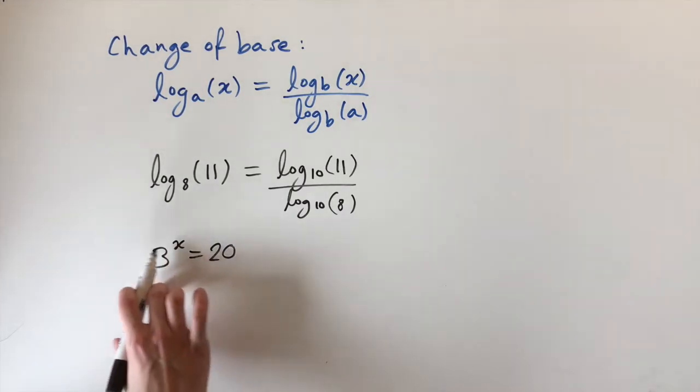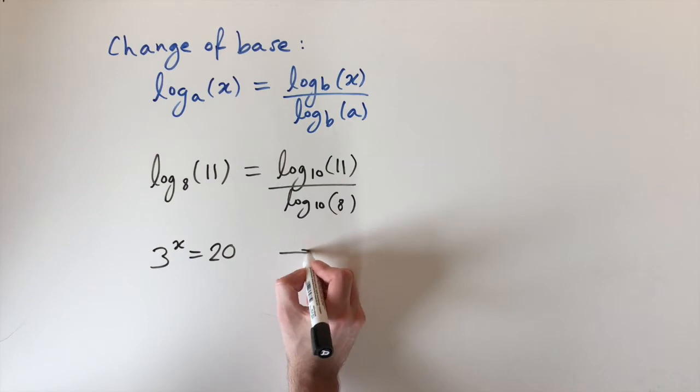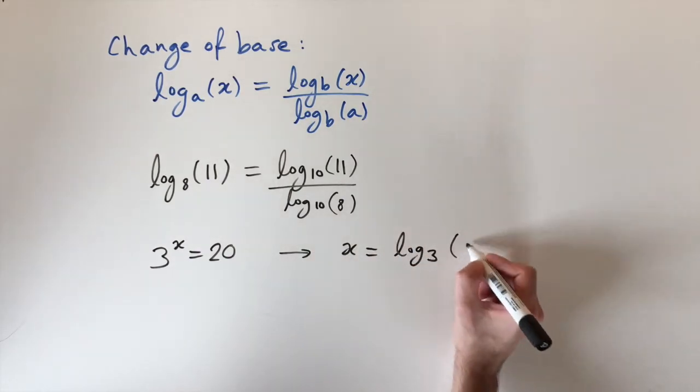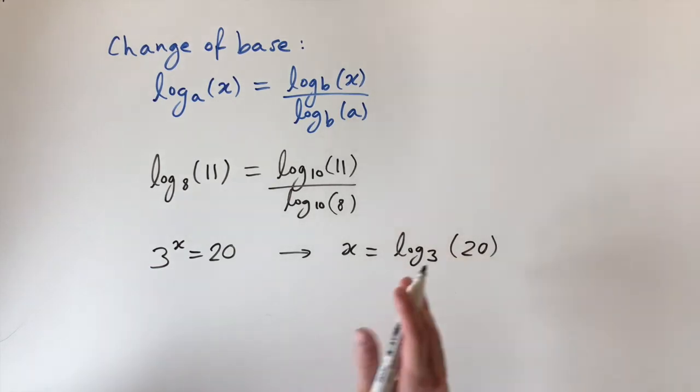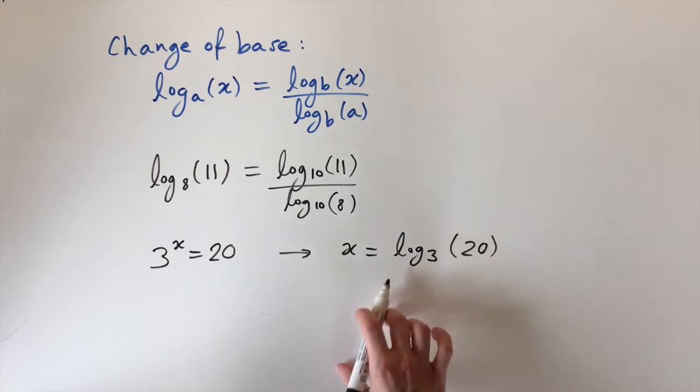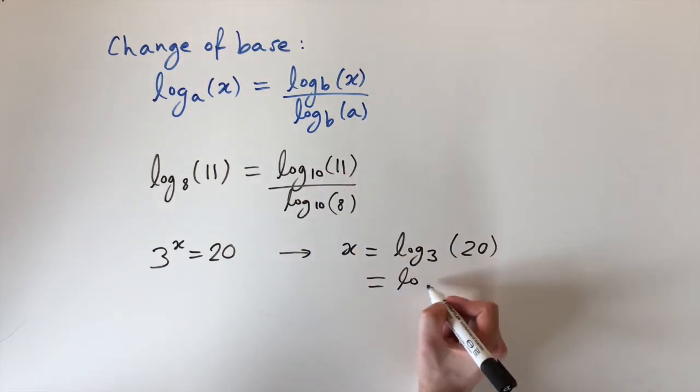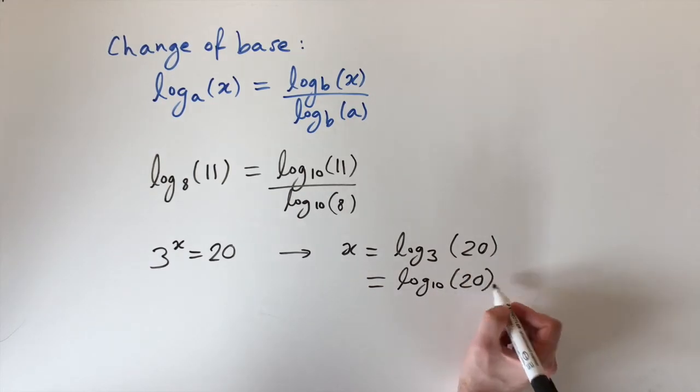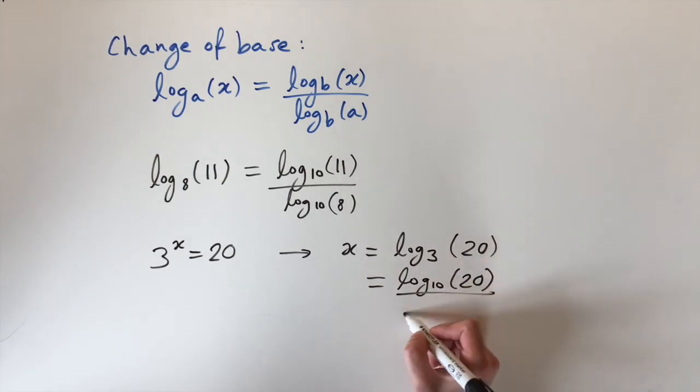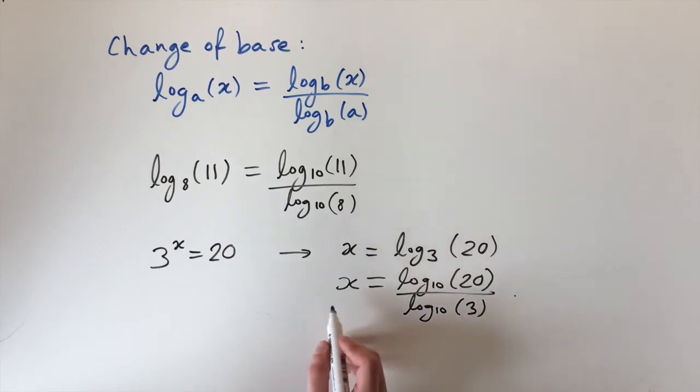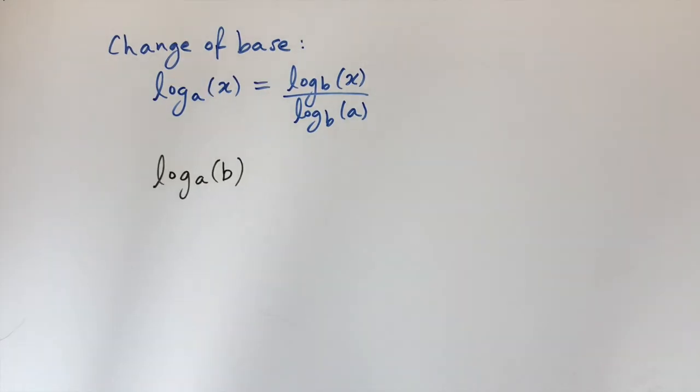then straight away we can just apply logarithms of base 3 to find out what x is because then x equals log base 3 of 20. This is just the definition of logarithm. But maybe log 3 isn't very nice to calculate using a calculator or a computer, and instead we want to calculate base 10 again. So if we use this formula, this is log base 10 of 20, the top number, divided by log base 10 of 3, which is the old base. So this is an equivalent expression for x which is the solution to this problem.